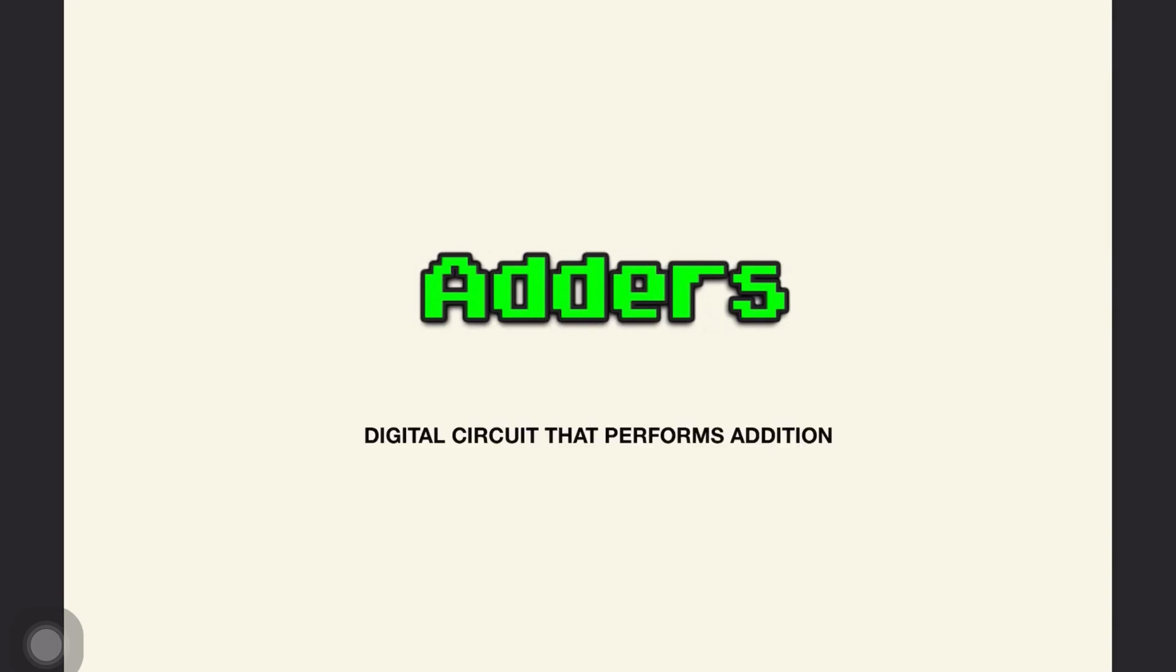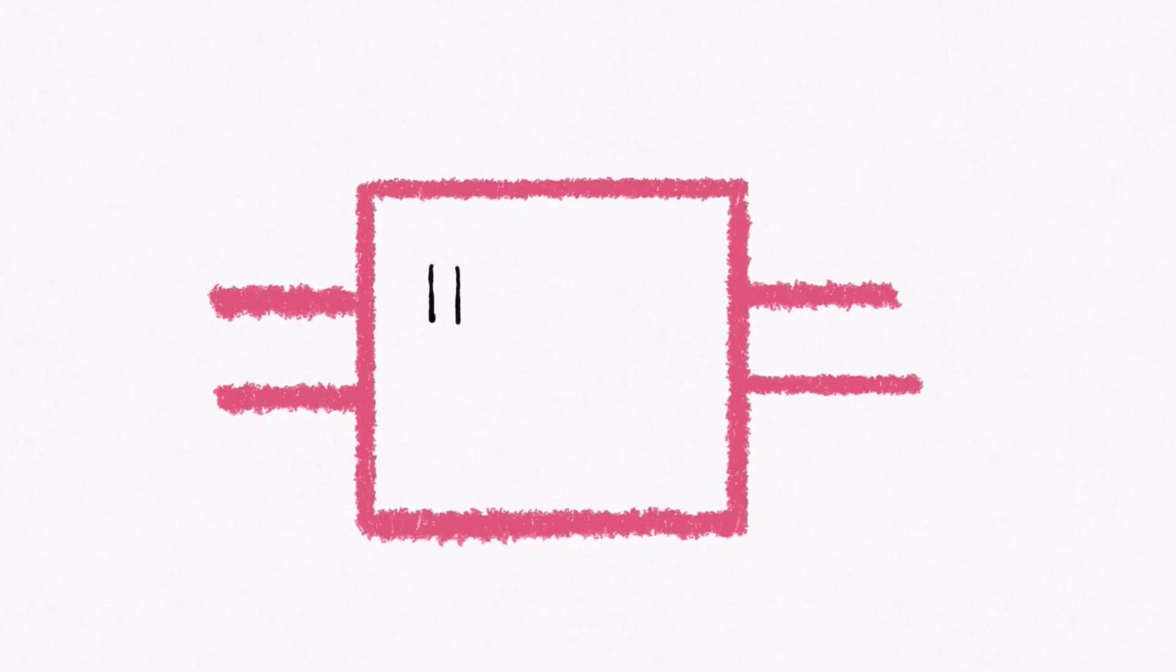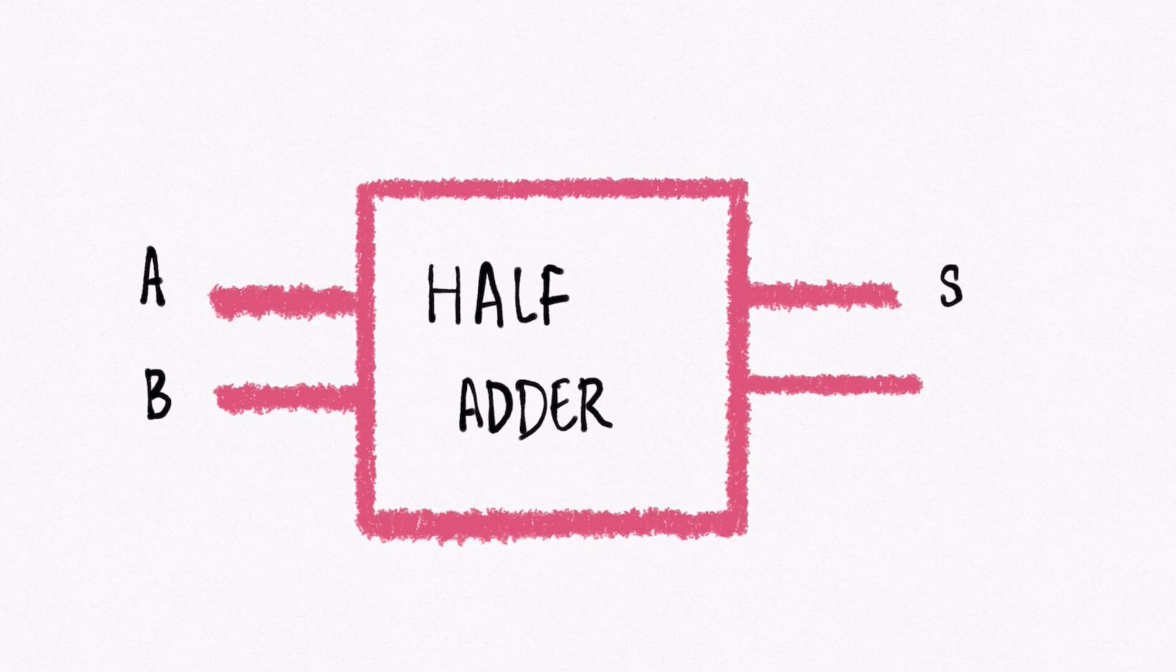Now let's look at how ALUs perform operations. An ALU consists of adders. An adder is a digital circuit that performs addition of numbers. A half adder takes two binary digits as inputs, A and B, and adds them together to output S, the sum.